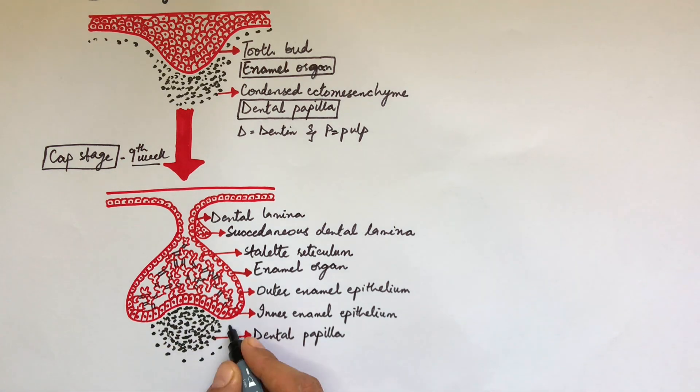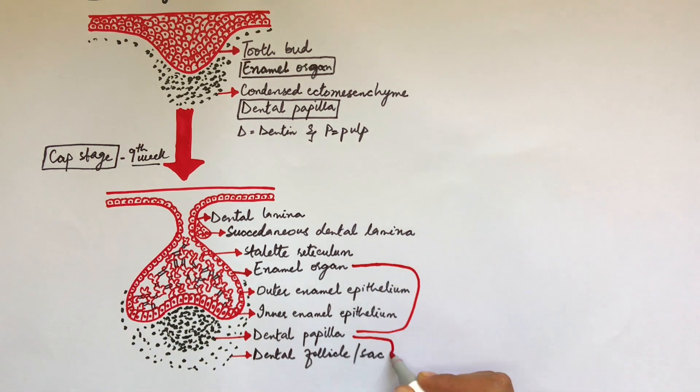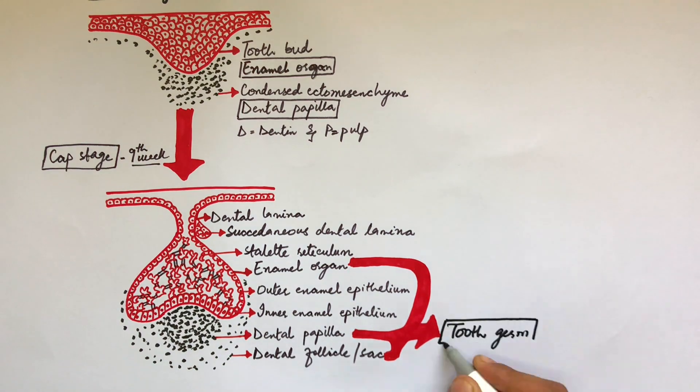Cells of the ectomesenchyme surrounding the enamel organ and the dental papilla are now called the dental follicle or the dental sac. The dental follicle will give rise to the periodontal tissues of the tooth. Together the enamel organ, the dental papilla, and the dental follicle make up the tooth germ.